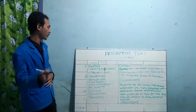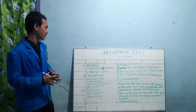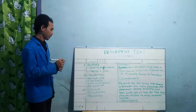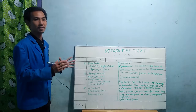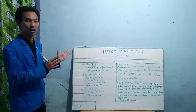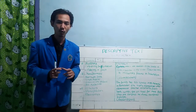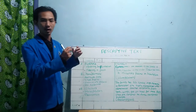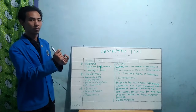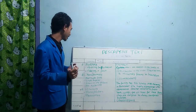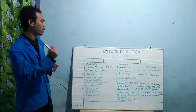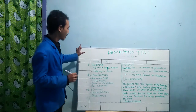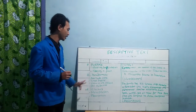What are the characteristics of descriptive text? The first characteristic is using attribute verbs — like 'be': is, am, are. The next is simple present tense, which is the main tense used in descriptive text. The next is focus on one object — when you make a descriptive text, you need to focus on one object. For example, if you want to describe an animal like a dog, you need to focus on the dog. The next is using adjectives to support your descriptive text. And the next is structure — unlike narrative text, descriptive text only has two structures: identification and description.